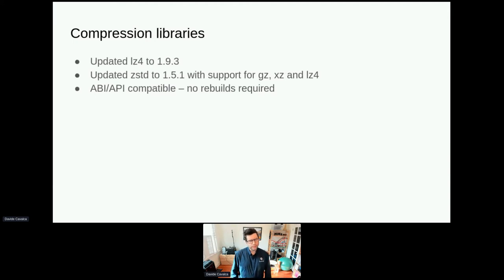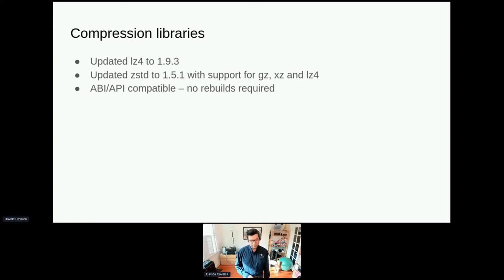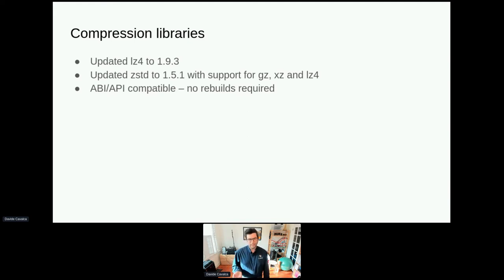Another thing we did recently was updating the compression stack in CentOS Stream 8. We updated both LZ4 and zstd to the latest versions, which had a number of performance improvements. With zstd, we also enabled support in the CLI for other archival formats. The reason we were able to do this is because these libraries are ABI and API compatible — normally if you update a library you'd need to rebuild all downstream dependencies, and half the distribution recursively depends on one of these, so it wasn't feasible to rebuild everything. But because the libraries have ABI and API guarantees upstream, we were able to do this without requiring any rebuilds. We'll be keeping an eye out for other packages that make the same kind of guarantee.